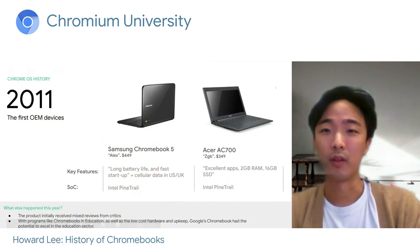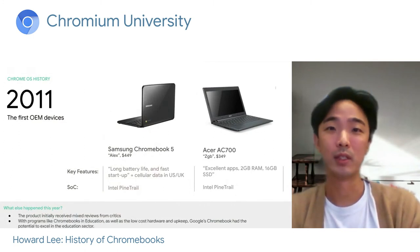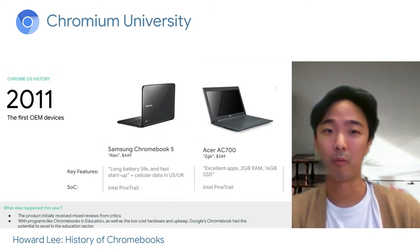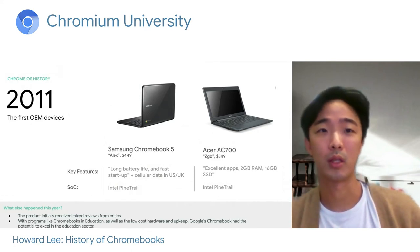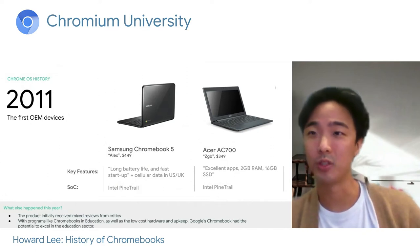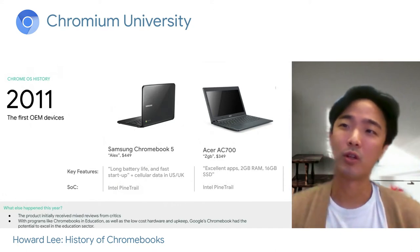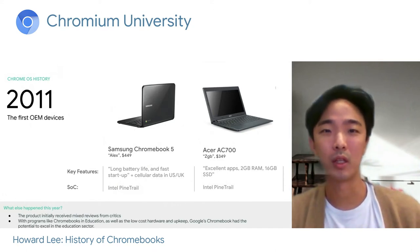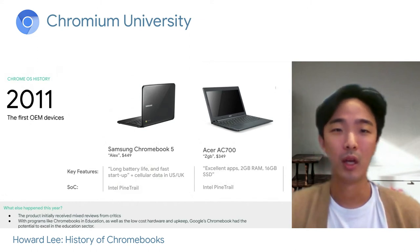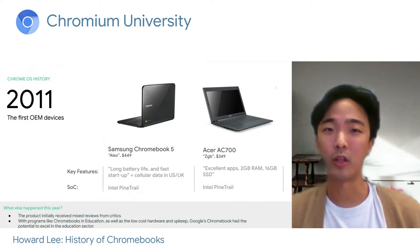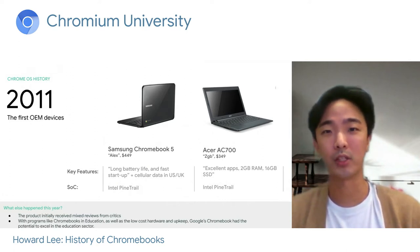In 2011, the following year, we launched our first OEM devices. From the CR48, we upgraded to more cores, lower frequency, and better performance, because we wanted to respond to all the feedback we got. The two devices that came about were the Samsung Chromebook 5, which you see on the left, and the Acer AC700. They were both in the range of $350 to $450, and both based on the Intel Pine Trail CPU. We led with longer-than-usual battery life and fast startup.